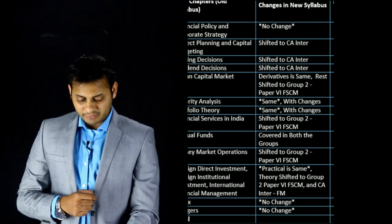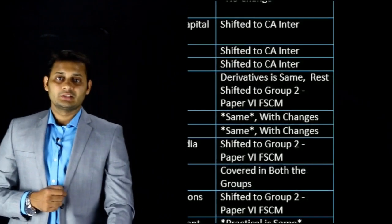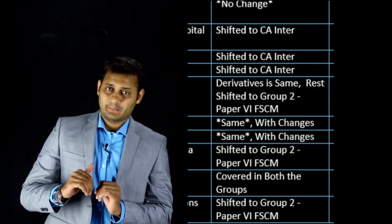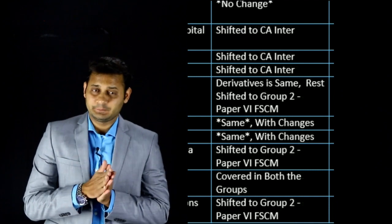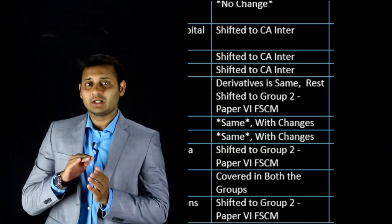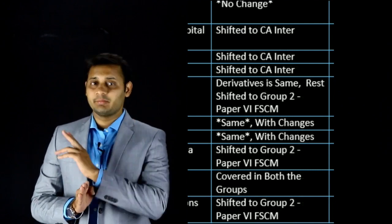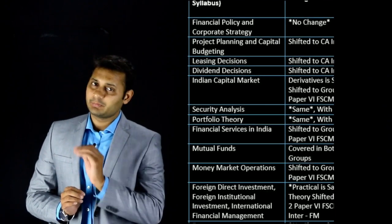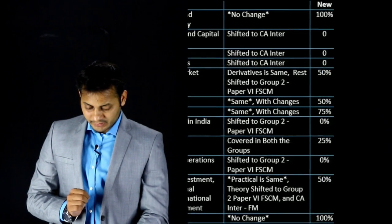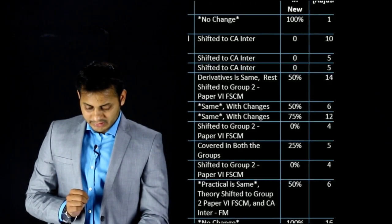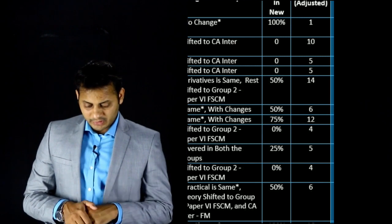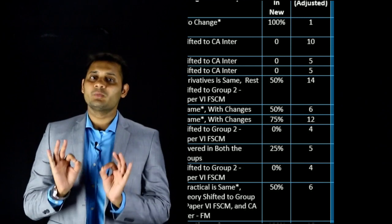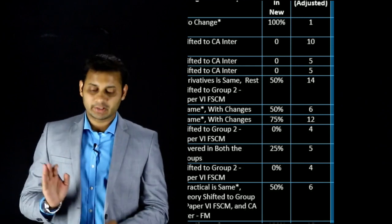These three chapters — Capital Budgeting, Leasing Decision, and Dividend Decision — have all been shifted to CA Intermediate, which is currently known as IPCC and will be discontinued after 30th June. So these three topics have been completely transferred to CA Intermediate level. Chapter 1 is 100% in the new syllabus as is, while Chapters 2, 3, and 4 are 0% — they have been removed from SFM.